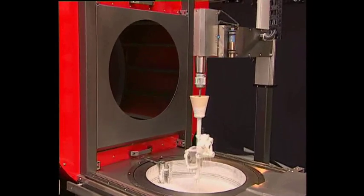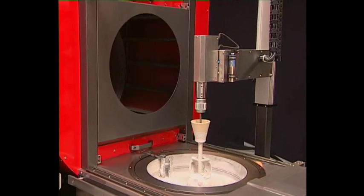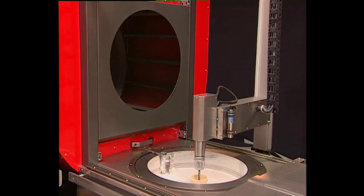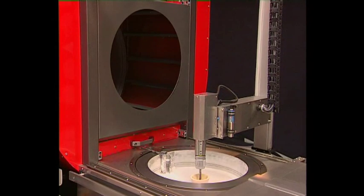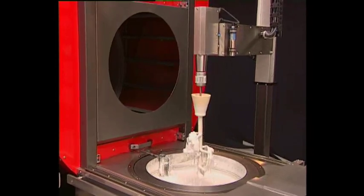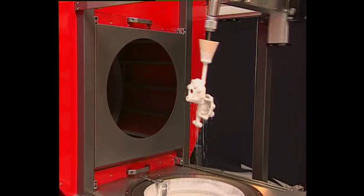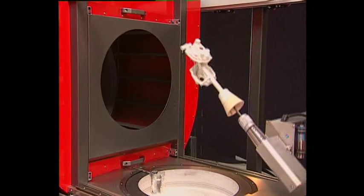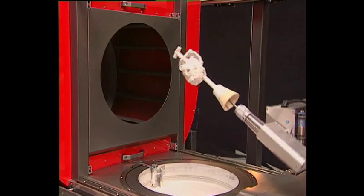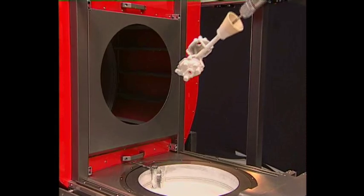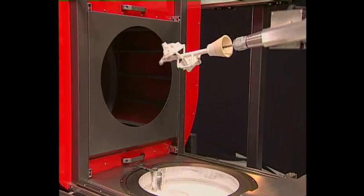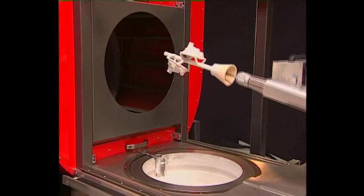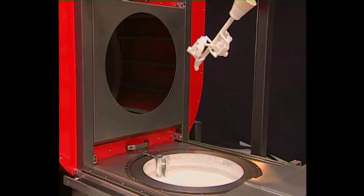The whole process runs automatically and does not require any control. The sand is the same for all layers. After the sanding, the tree is driven back into the drying chamber, and the second layer is ready after about half an hour.